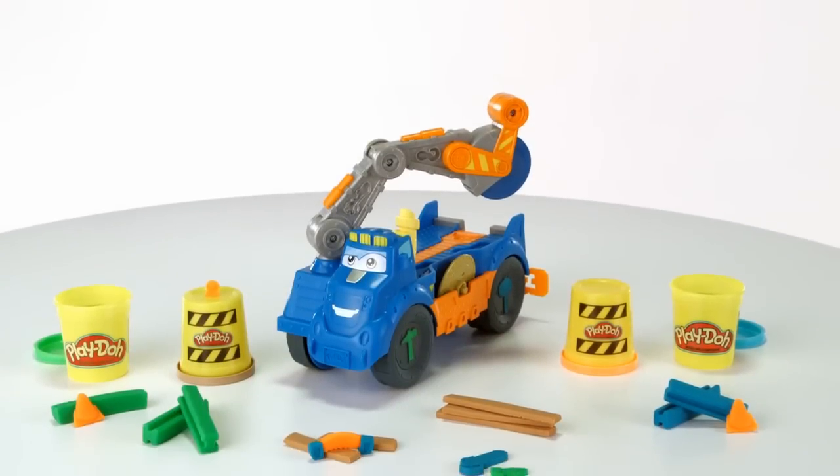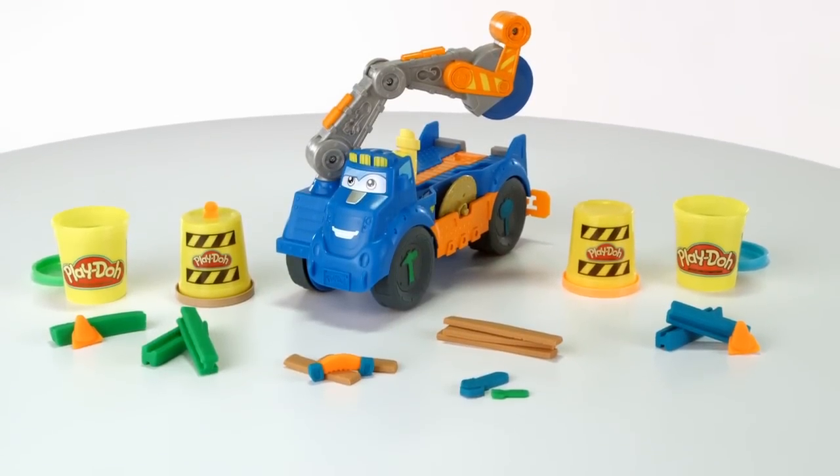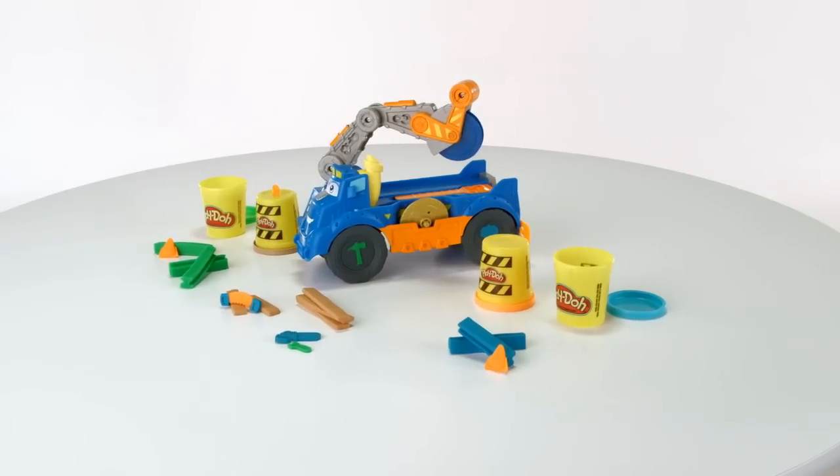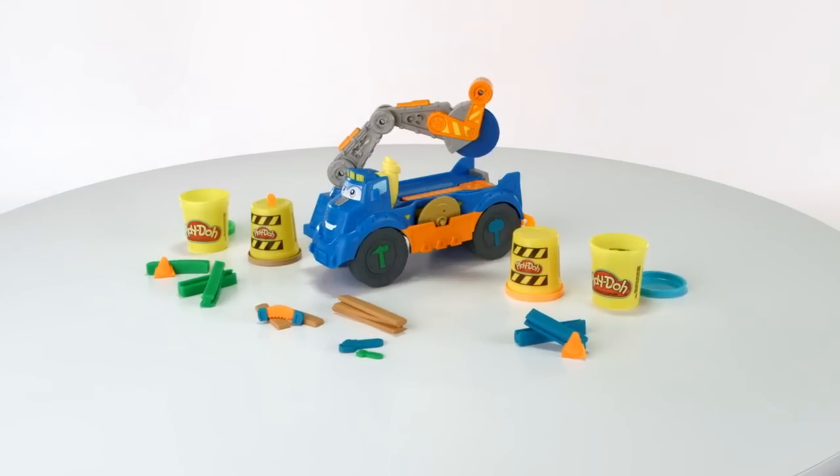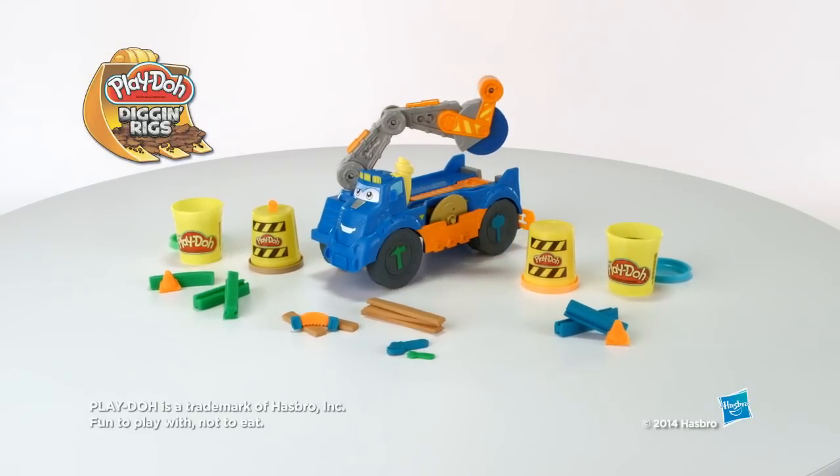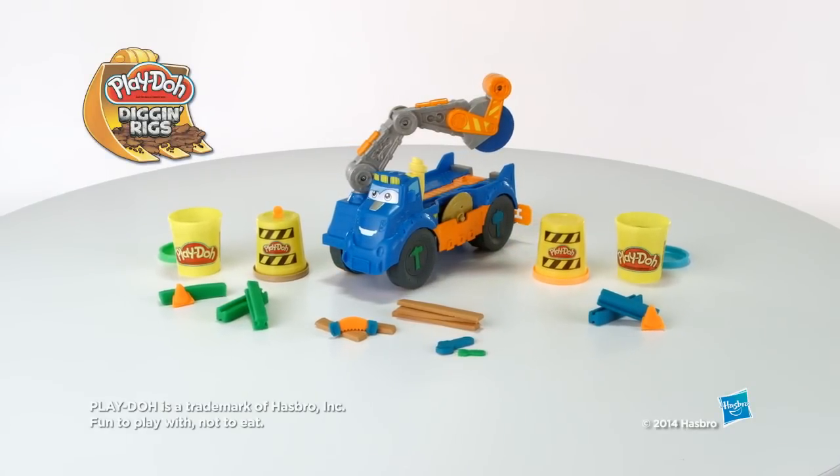The Play-Doh Buzzsaw Vehicle Play Set is for kids ages 3 and up and includes two different saw blades and four cans of Play-Doh modeling compound. It's the Play-Doh Buzzsaw Vehicle Play Set from Hasbro.